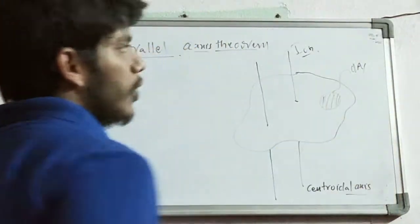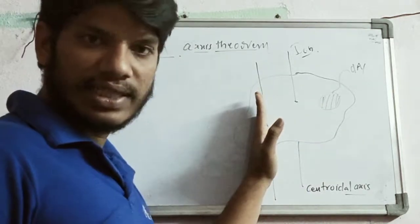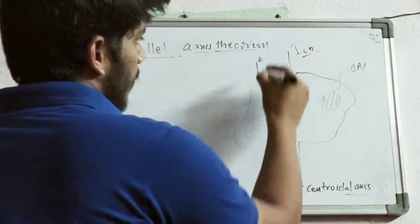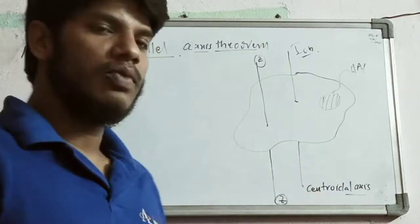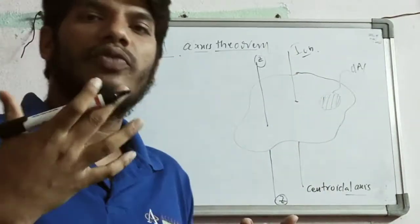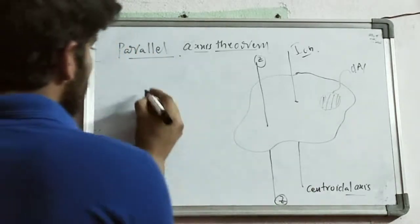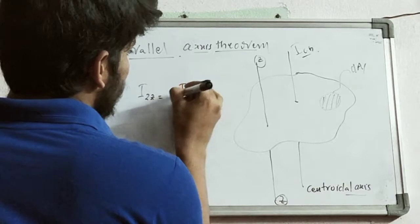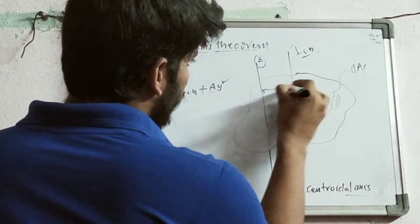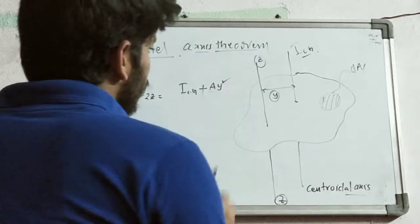This elementary area is dA. I want to know the moment of inertia of this whole body about the ZZ axis — an axis that is not the centroidal axis. The parallel axis theorem gives: Izz = Icg_zz + A × y², where y is the distance between the two parallel axes. These two axes are parallel to each other, which is why this theorem is called the parallel axis theorem.